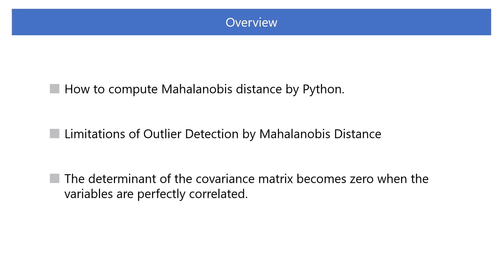In this section, you will learn how to compute Mahalanobis distance by Python, limitations of outlier detection by Mahalanobis distance, and as an appendix, the determinant of the covariance matrix becomes 0 when the variables are perfectly correlated.